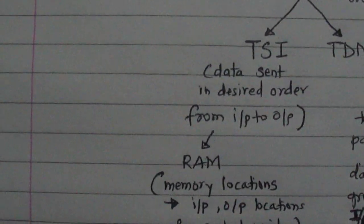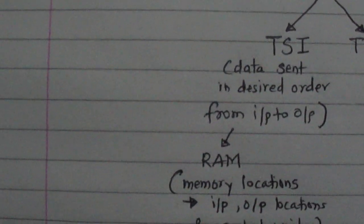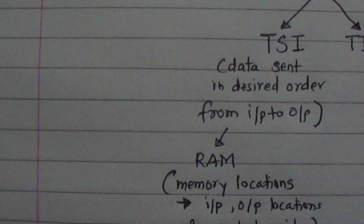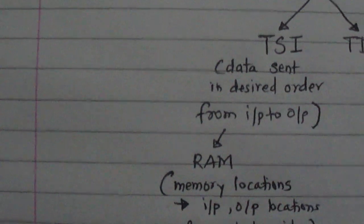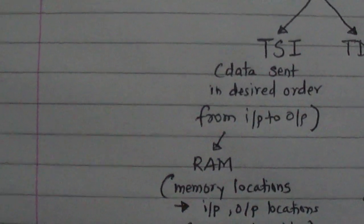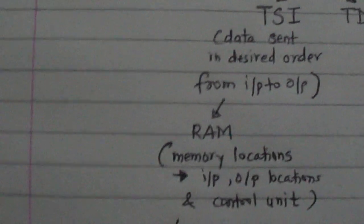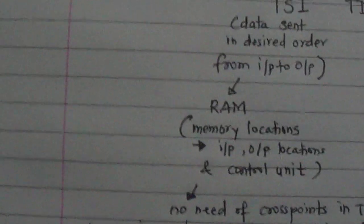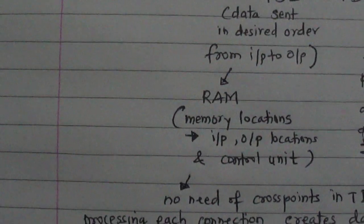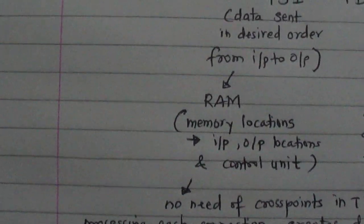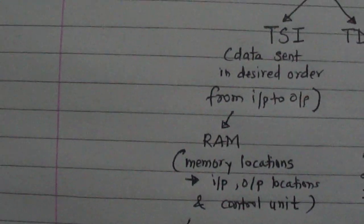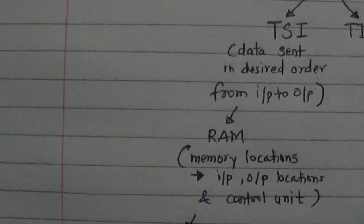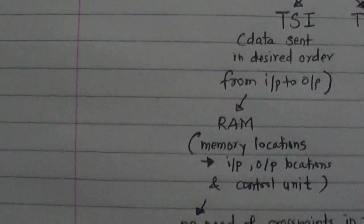TSI stands for Time Slot Interchange, and TDM bus stands for Time Division Multiplex Bus. In TSI, data is not sent in the same order from input to output — it is sent in the desired order. In time division multiplexing, data is stored in RAM. RAM consists of memory locations, input/output locations, and a control unit, which knows the order in which data is sent from input to output.